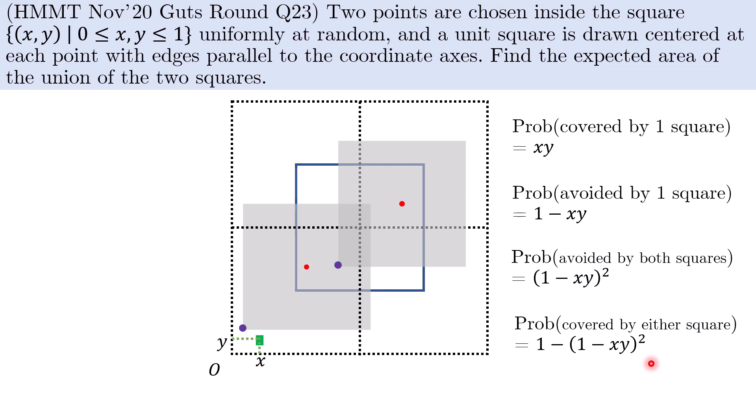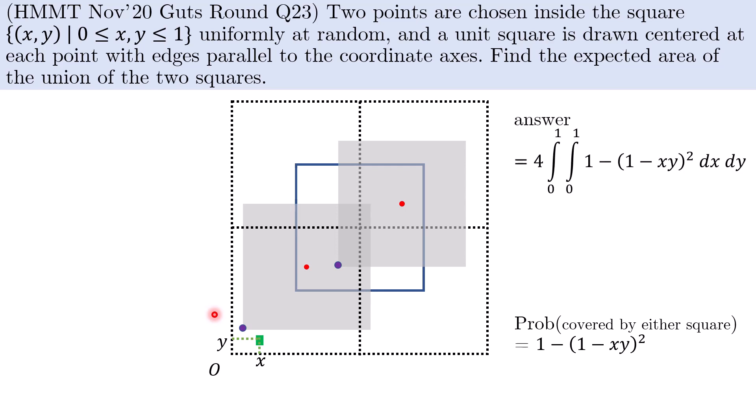And so now it is a matter of integrating over the lower left quadrant. We sum this probability over the lower left quadrant using a double integral from 0 to 1 and 0 to 1. But let us not forget to multiply by 4 to cover all 4 quadrants. The answer is therefore given by the expression shown.